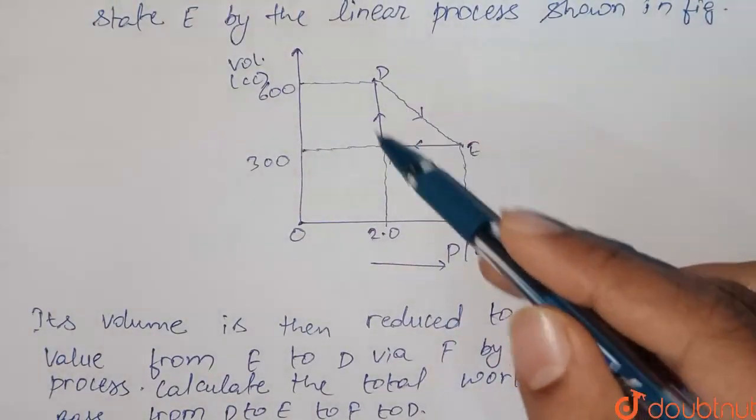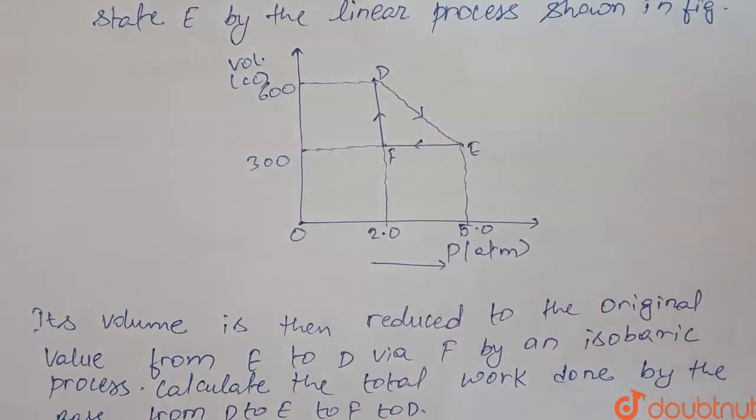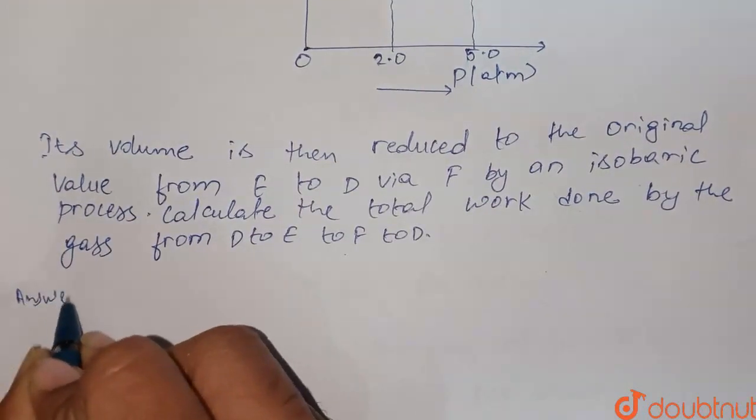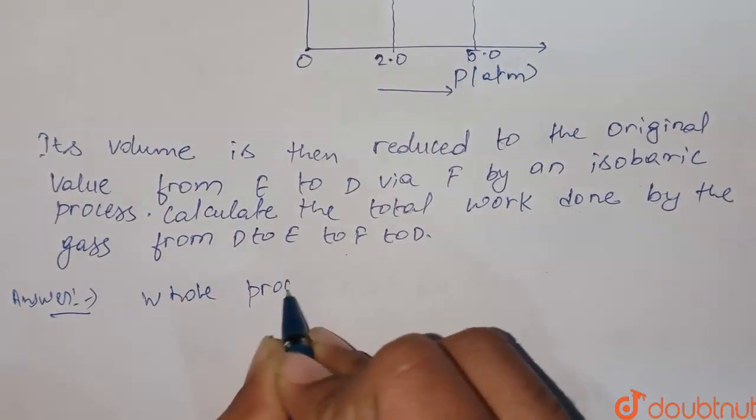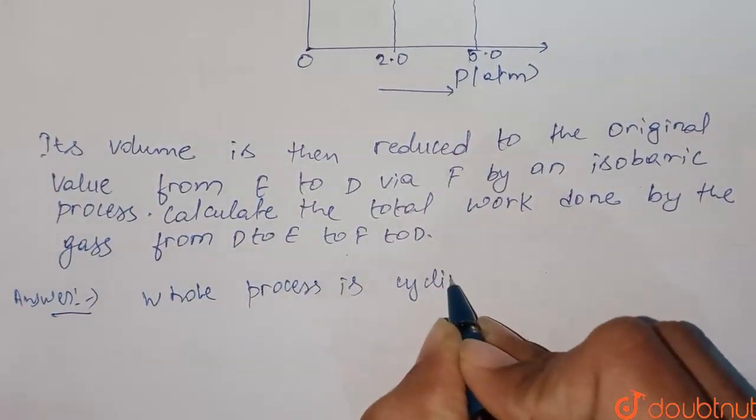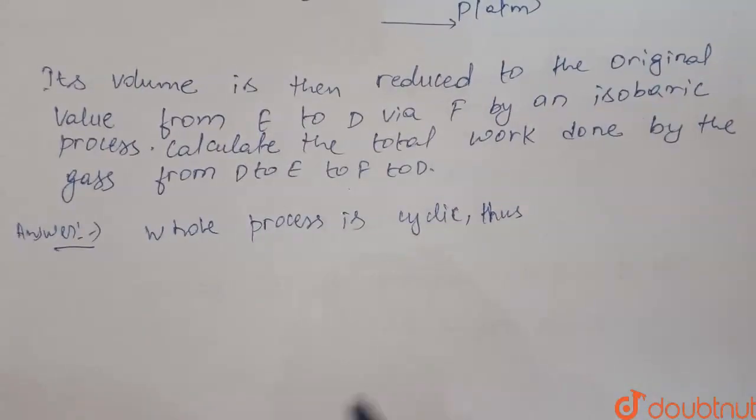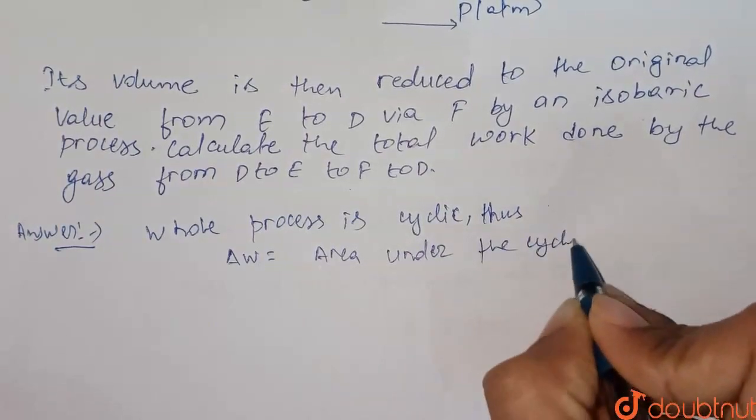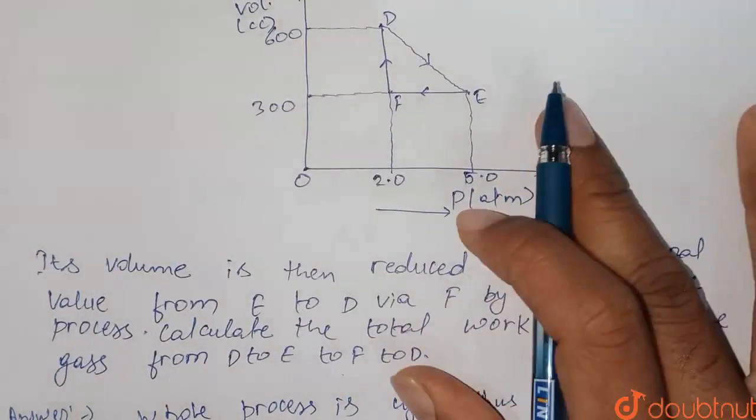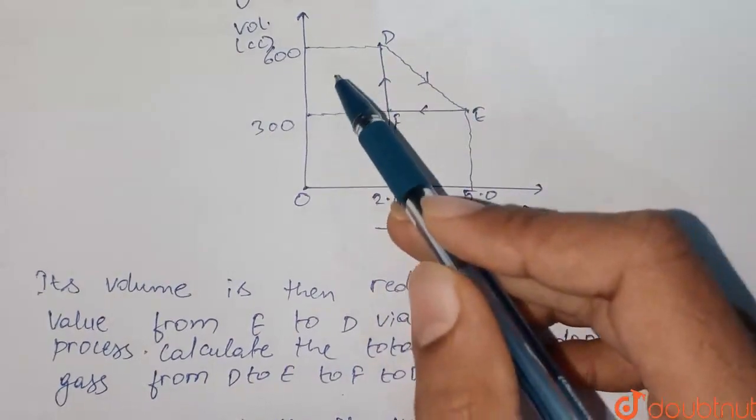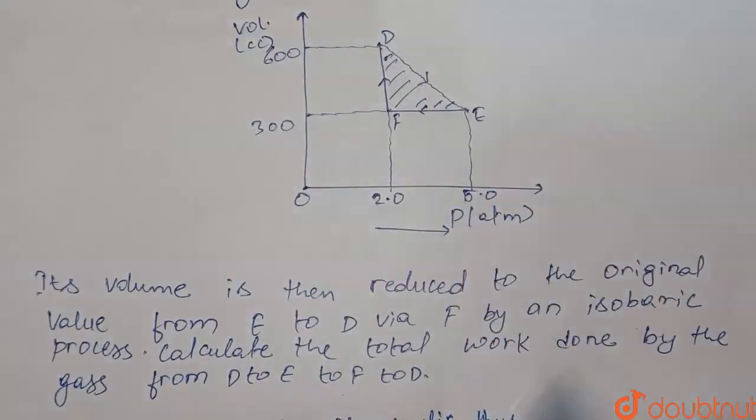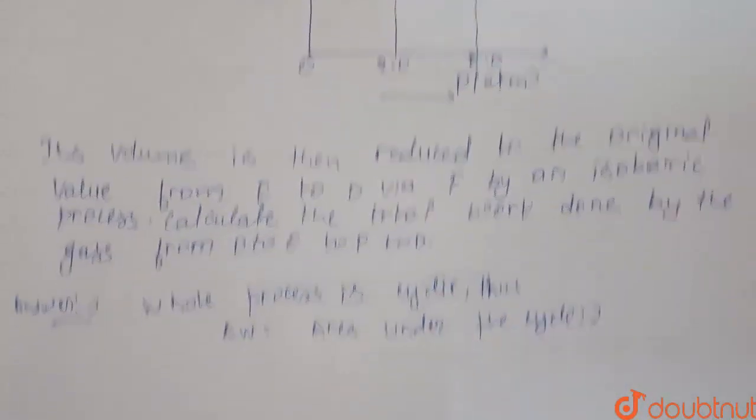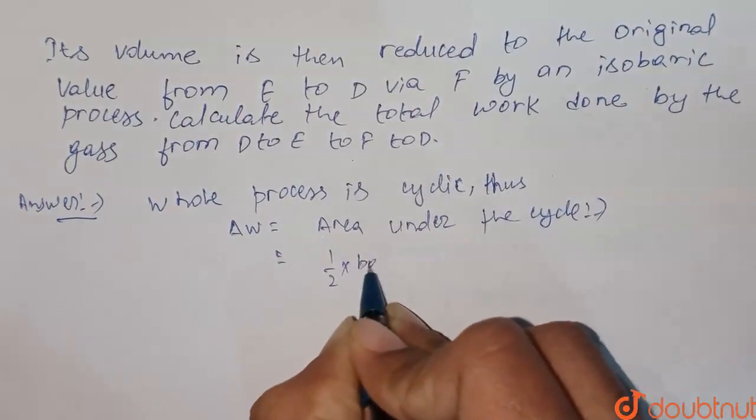If you consider the whole process, this is basically a cyclic process. In a cyclic process, the work done is the area under the PV graph. The whole process is cyclic, thus ΔW will be the area under the cycle. Consider this curve - this area represents the ΔW. This whole cycle is a triangle, so its area will be simply half into base into height.